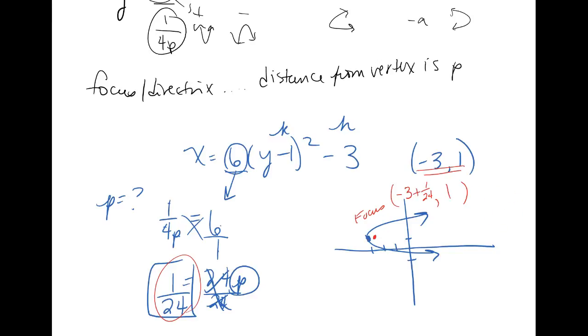Now the directrix is always behind the shape, so I'm going to switch to green now. So I'm going to go behind the vertex a distance of 1 24th and I'm going to draw a vertical line. And this would be your directrix. The directrix is always a line. And so the equation of a vertical line is always x equals something. Now that something is going to be found the same way we just did the focus, guys. We're going to go to the vertex, but now we're going to kick it back 1 over 24th. So I still start at negative 3, but instead of adding the 1 over 24, I'm going to subtract the 1 over 24. And then that is my answer. Like I said, you can do the arithmetic and simplify it or you can just leave it alone.